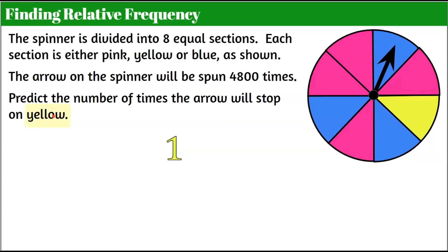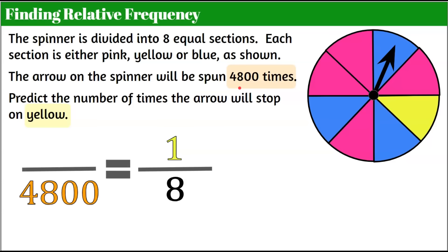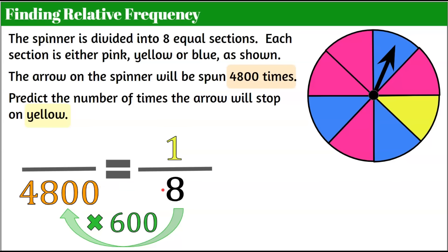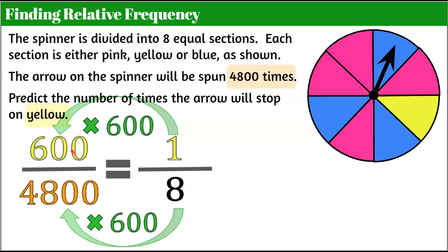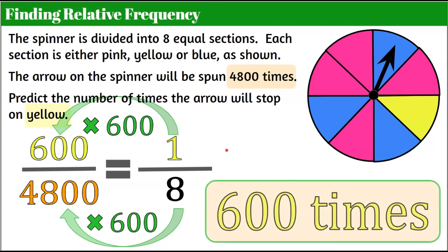We want to predict yellow. There is one section out of eight on the spinner that is yellow, so landing on yellow we have a 1 in 8 chance. If we conducted the experiment 4,800 times, we would expect these ratios to be equivalent. 8 multiplied by what is 4,800? That is 600. So we take 1 and multiply it by 600 — 1 times 600 is 600. We would expect this spinner, if spun 4,800 times, to stop on yellow 600 times. That is relative frequency using theoretical probability to predict the outcome of an experiment.